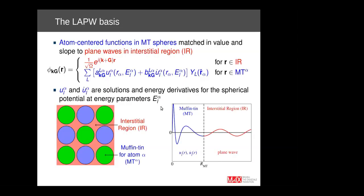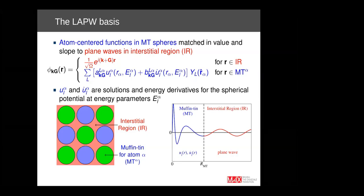Let me show you the linearized augmented plane wave basis. It is based on a partitioning of space of the unit cell into different regions. On one hand, we have muffin tin spheres around each atom, and then we have the interstitial region in between. The muffin tin spheres are nearly touching because this is efficient. Within the interstitial region, each basis function is a plane wave. In the muffin tin spheres, we have an expansion in terms of radial functions times spherical harmonics, with radial functions u and u-dot, and expansion coefficients a and b determined by enforcing continuity of value and slope at the muffin tin sphere boundary.